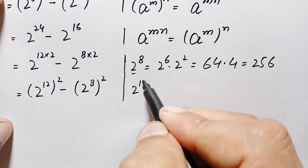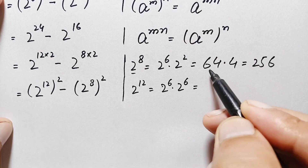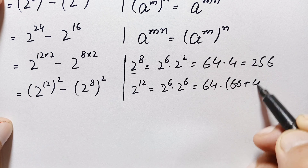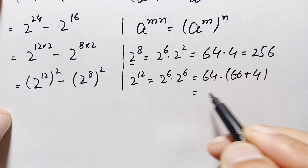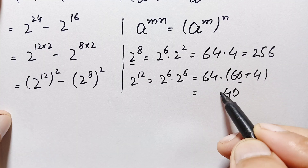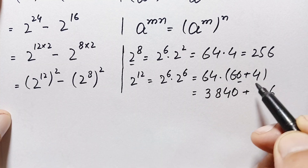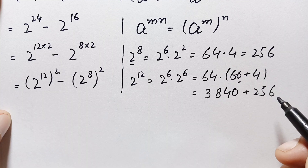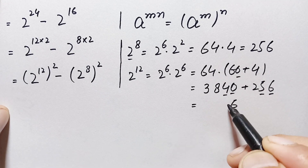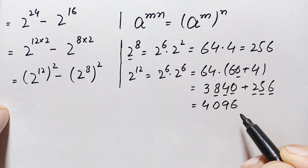Now we find the value of 2 raised to power 12. This can be written as 2 raised to power 6 times 2 raised to power 6, which is 64 times 64. We write the second 64 as 60 plus 4. Multiplying 64 by 60: 64 times 0 is 0, 6 times 4 is 24, carry 2; 6 times 6 is 36 plus 2 is 38. Multiplying 64 by 4: 4 times 4 is 16, carry 1; 4 times 6 is 24 plus 1 is 25, giving 256. Adding the partial results: 6, 0 is 6; 5 plus 4 is 9; 2 plus 8 is 10, carry 1; 3 plus 1 is 4. So 2 raised to power 12 equals 4096.